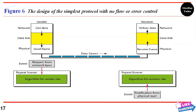The simplest protocol is our first protocol, which has no flow or error control. It is a unidirectional protocol in which data frames travel in only one direction, from the sender to the receiver. We assume that the receiver can immediately handle any frame it receives, with processing time small enough to be negligible. The data link layer of the receiver immediately removes the header from the frame and hands the data packet to its network layer, which can also accept the packet immediately.